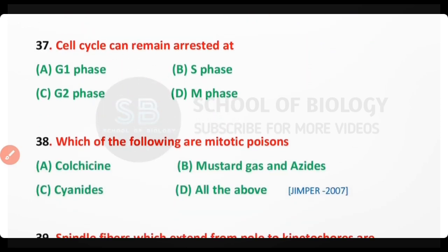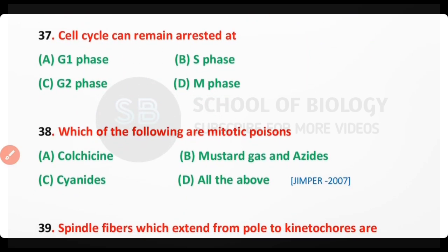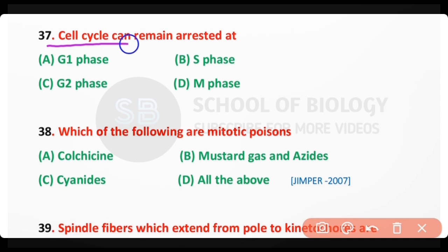Question number 37. The cell cycle can remain rested at: G1 phase; S phase; G2 phase; M phase. The correct answer is option A. The cell cycle can be rested at G1 phase.